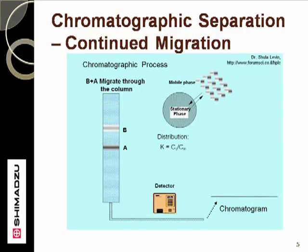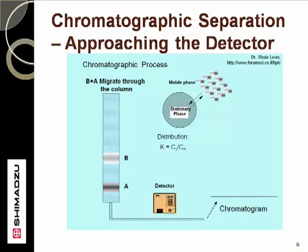As the two components elute, the differences in the interaction allow the A component to pull away from the B component. As the A component is approaching the outlet end of the column, the B component is still back in the middle. It is important to note that the A component, by virtue of its faster elution, tends to not diffuse as much in the stationary phase packing. Therefore, its elution band occupies less column volume than does the slow-eluting B component. This should mean that, for equal-sized peaks, the A component peak will be narrower than the B component peak.